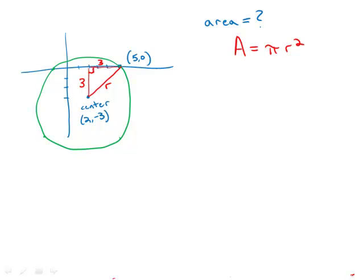So we get a little right triangle with legs each equal to 3 and hypotenuse r. The Pythagorean theorem tells us that r squared equals 3 squared plus 3 squared, which, of course, is 9 plus 9. So r squared equals 18.